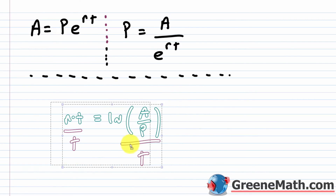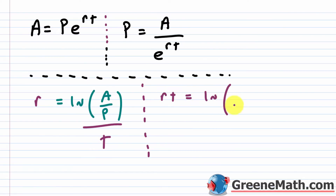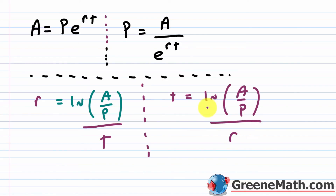So that's another formula. If somebody asks for the time instead, r and t swap places: since rt equals ln(A/P), dividing both sides by r gives t equals ln(A/P) divided by r. These are the different formulas you'll use. As you see different problems, think about what you're asked to solve for and plug in accordingly. We'll cover logarithms in more detail in the next few lessons.